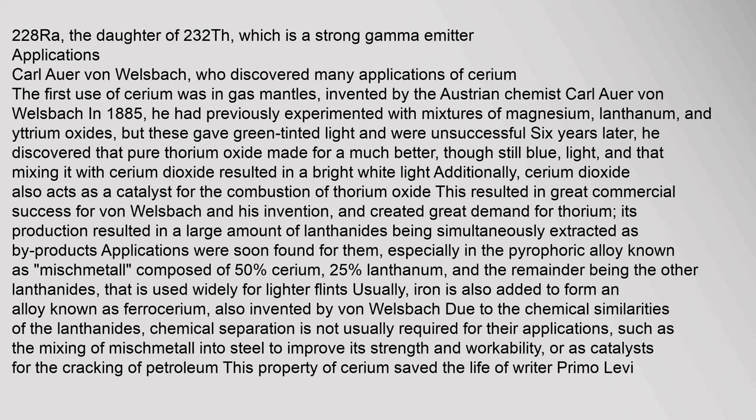The first use of cerium was in gas mantles, invented by the Austrian chemist Karl Auer von Welsbach in 1885. He had previously experimented with mixtures of magnesium, lanthanum, and yttrium oxides, but these gave green-tinted light and were unsuccessful. Six years later, he discovered that pure thorium oxide made for a much better, though still blue, light, and that mixing it with cerium dioxide resulted in a bright white light. Cerium dioxide also acts as a catalyst for the combustion of thorium oxide, resulting in great commercial success for von Welsbach and creating great demand for thorium.